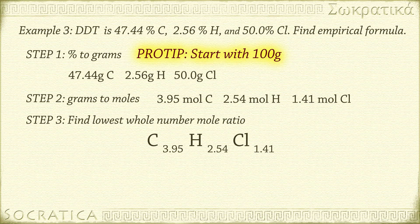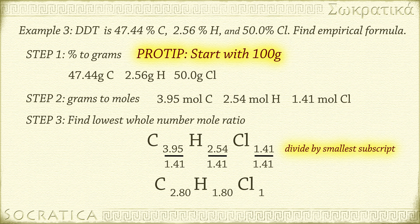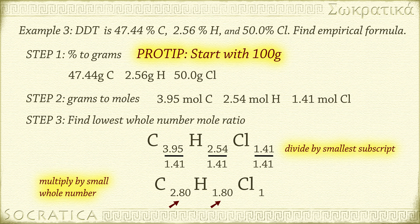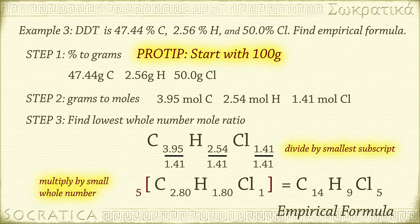Step 3: write C₃.₉₅H₂.₅₄Cl₁.₄₁ and divide through by the smallest value, 1.41. We get C₂.₈₀H₁.₈₀Cl₁. We're not finished — we still don't have whole number ratios. Don't panic; sometimes it takes a couple of steps. Looking at the 0.80, multiplying by 5 will make it a whole number. So we multiply all subscripts by 5 and get C₁₄H₉Cl₅. That's the empirical formula for DDT.